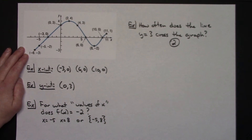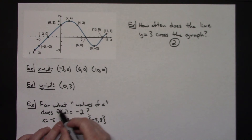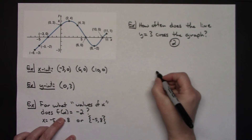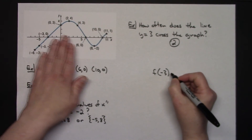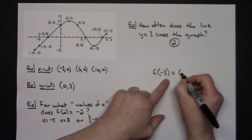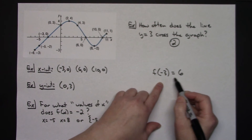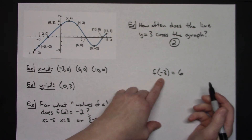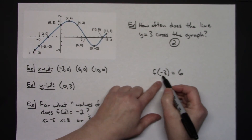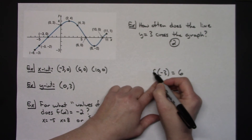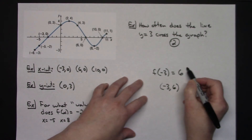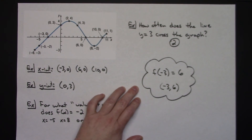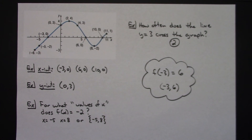Just to reinforce function notation in general: f of negative 3 equals 6 should tell you that the ordered pair (negative 3, 6) is on the graph. The input negative 3 is your x value being plugged into the function, and you get out the y value of 6. Understanding function notation this way helps you know what you're looking for and where to look on the graph.